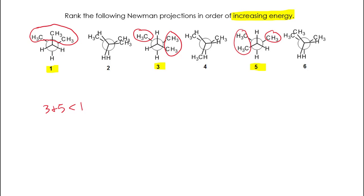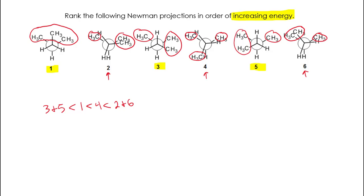Now let's look at the eclipsed conformations: two, four, and six. Number two has two methyls that are overlapping each other and one methyl that's isolated behind a hydrogen. Number four has all of the methyl groups isolated either in front of or behind a hydrogen. Number six has two methyls that are overlapping and one methyl that is isolated behind a hydrogen. So the best structure in terms of stability is number four, because all of those methyl groups are isolated with hydrogen atoms instead of being next to another bulky methyl group. Structures two and six are the highest in energy, and they are equal to each other because they have the same steric strain.